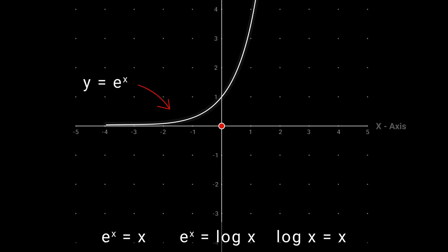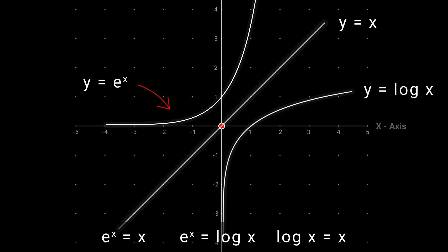When e to the power x equal to x, e to the power x equal to log x, and log x equal to x. Now draw y equal to e raise to power x, y equal to x, and y equal to log x. The graph of e raise to power x, x, and log x never intersect with each other.